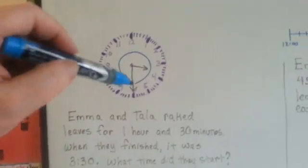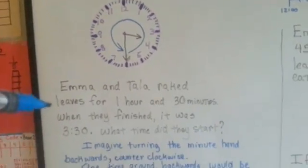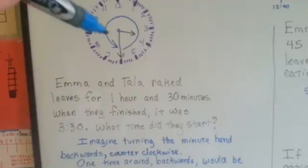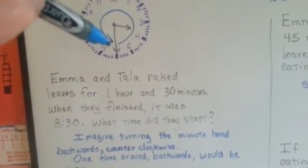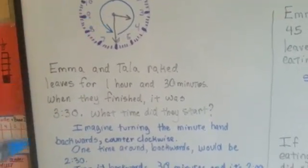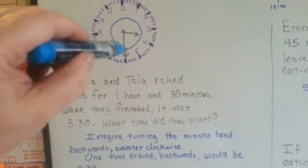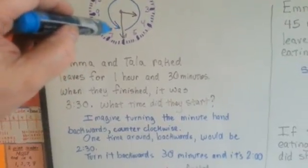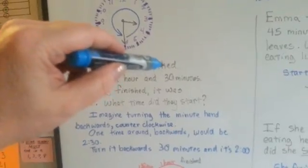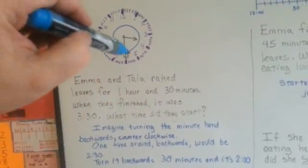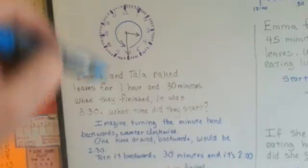So we need to go back 1 hour and 30 minutes. Imagine turning the minute hand backwards counter-clockwise. If we turned it around one time, instead of 3:30, it would be 2:30. Now we need to go back another 30 minutes, and then that would put it from 2:30 to 2 o'clock.